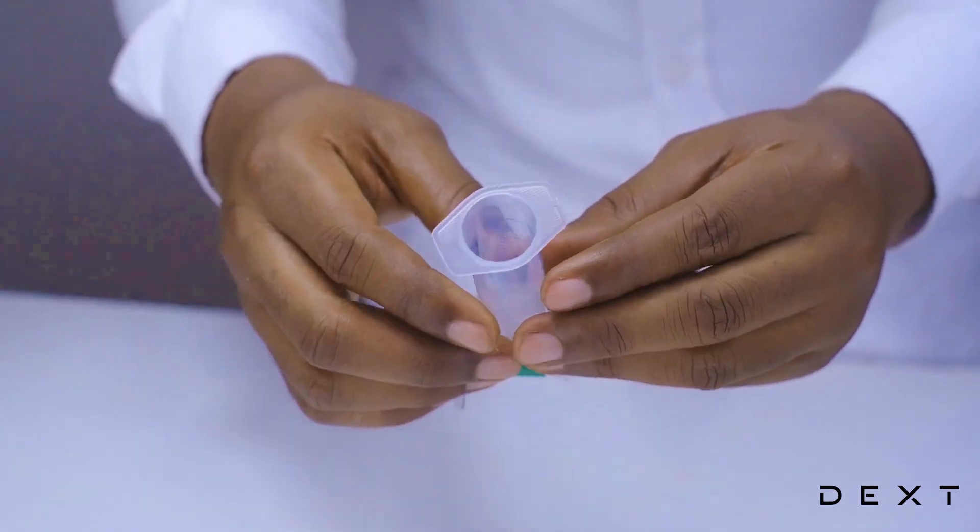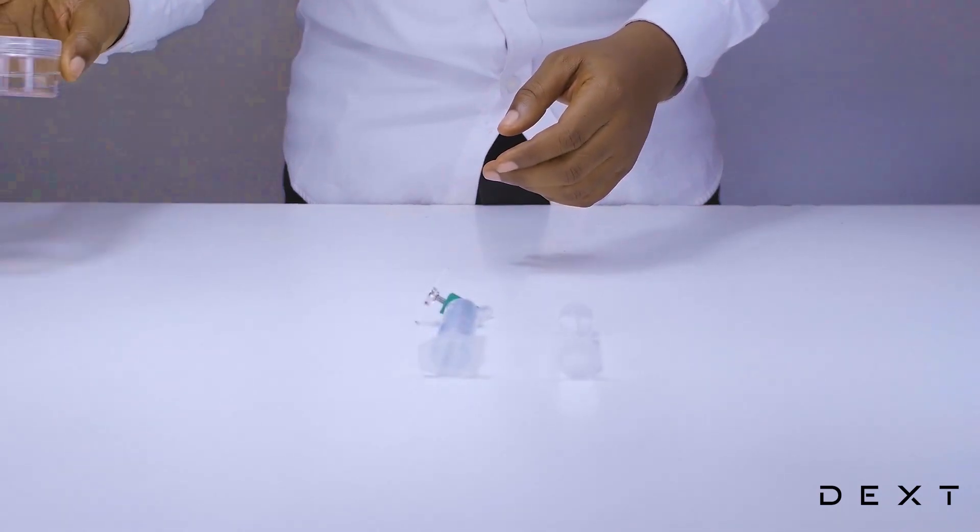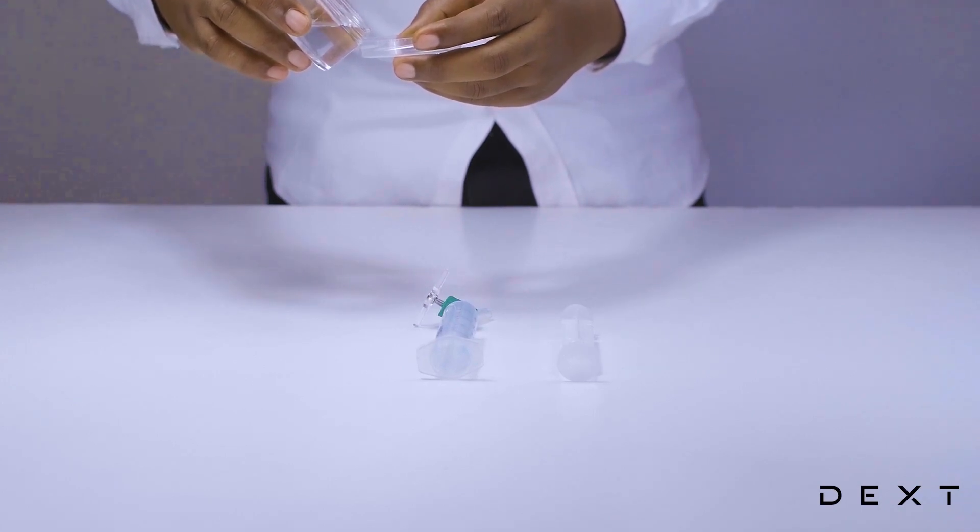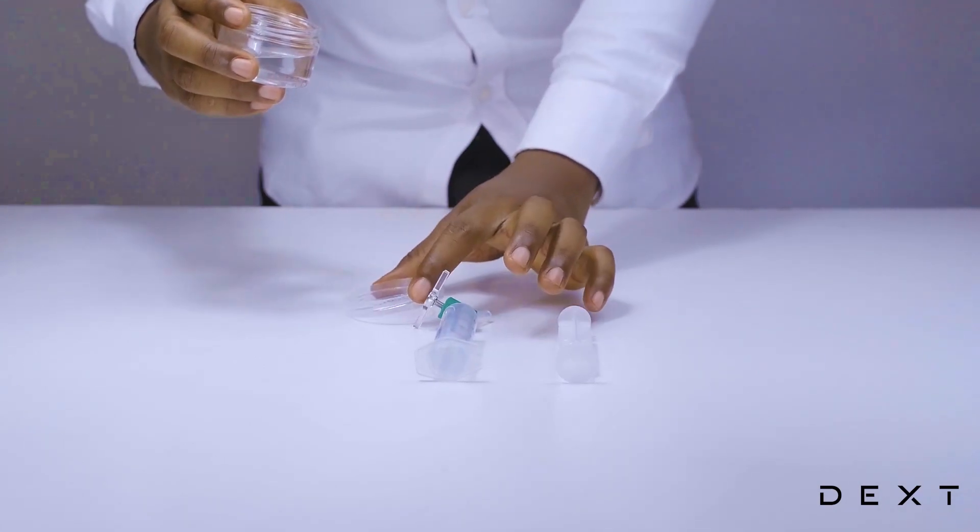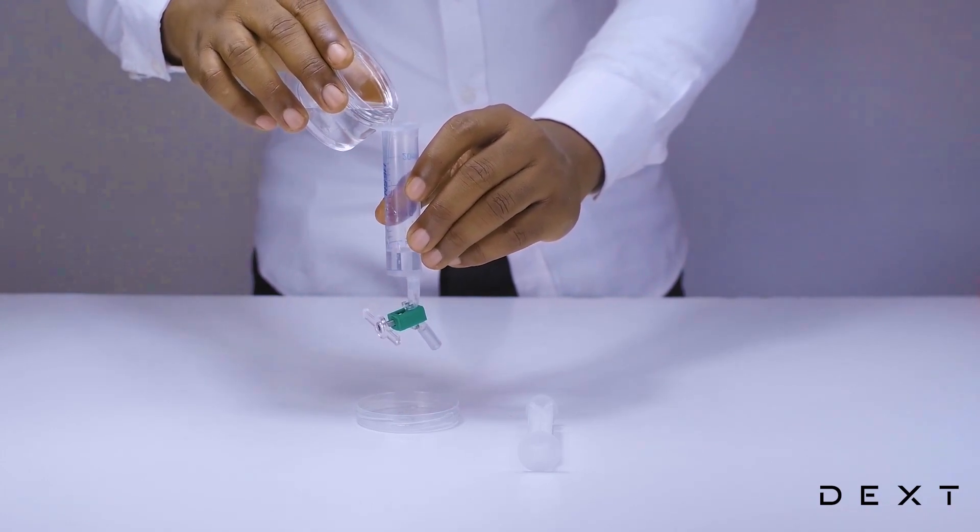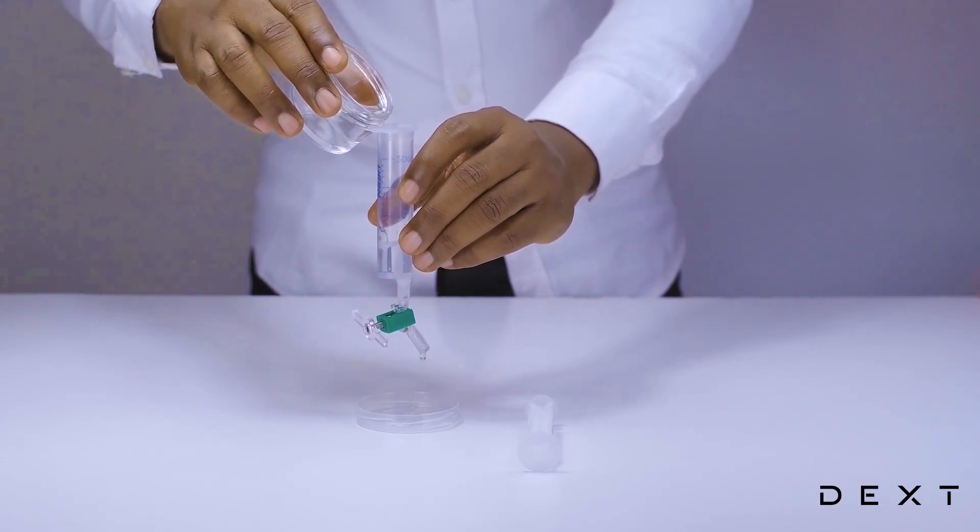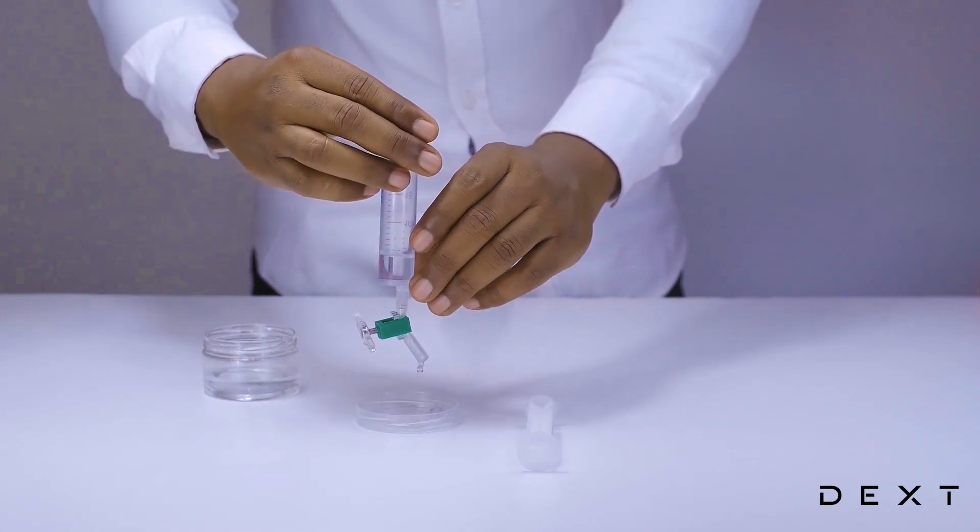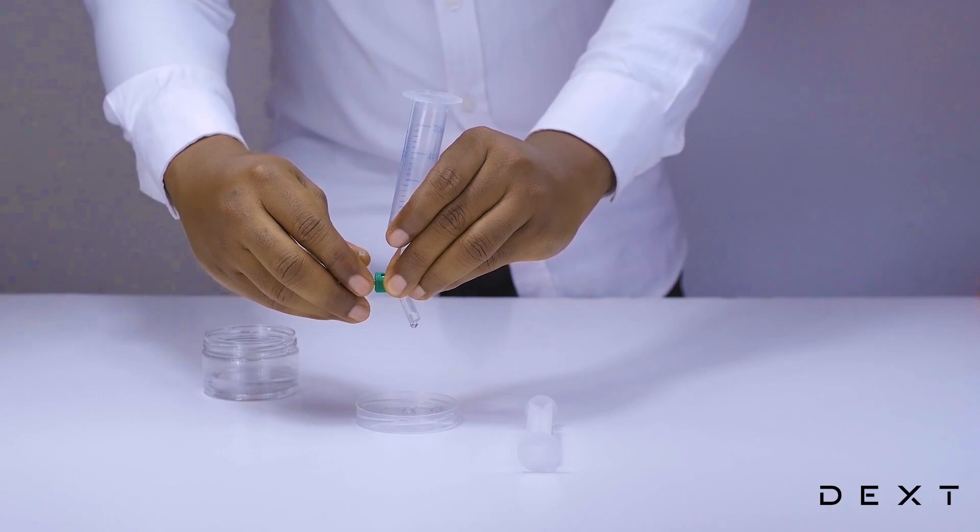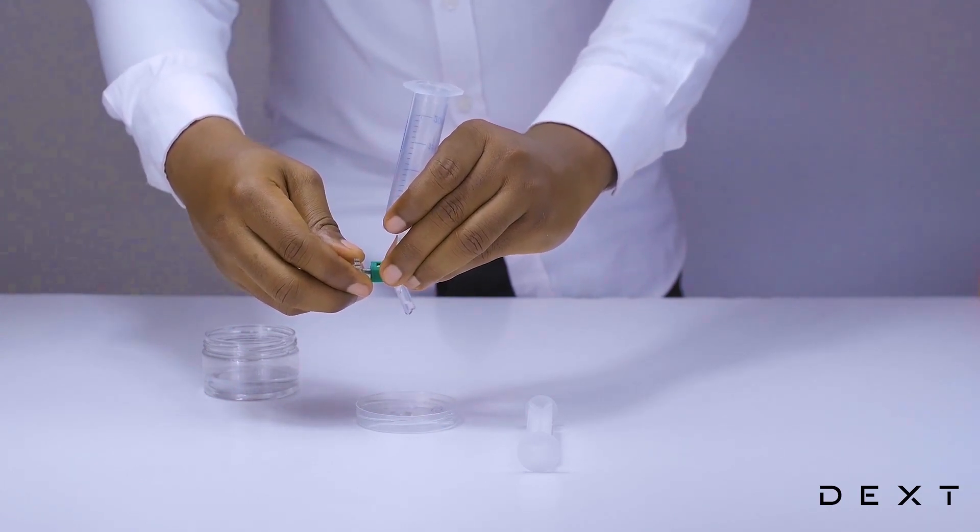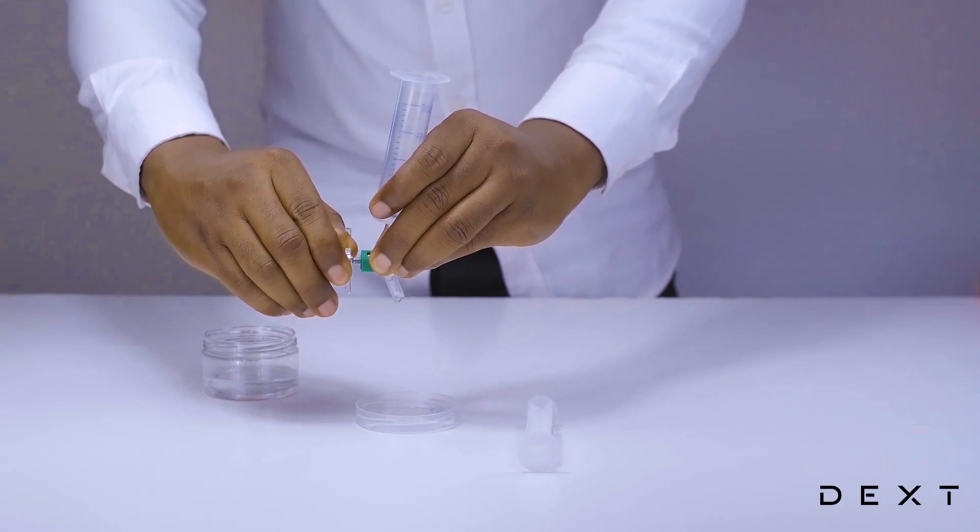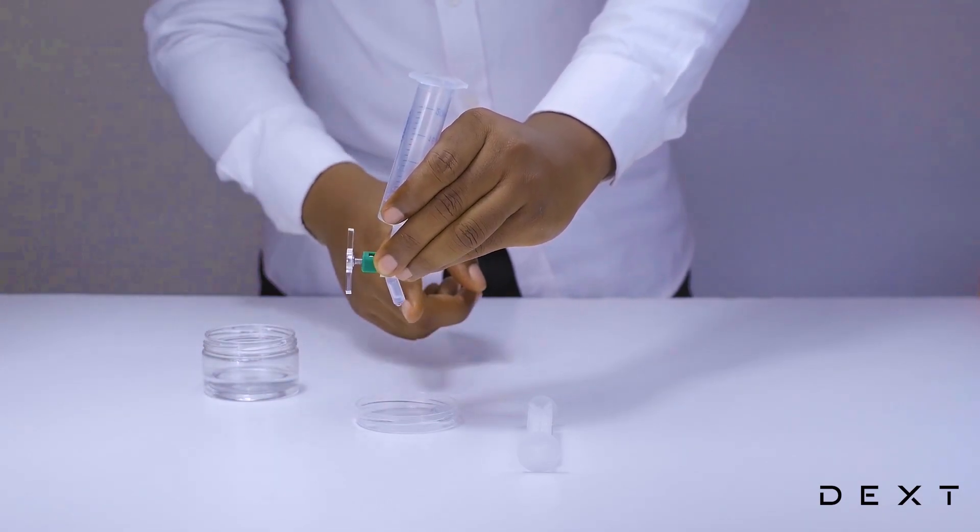The next thing we are going to do is to test our improvised separating funnel. We are going to do that by pouring just a little bit of water through it. We will gently pour some water. It is very likely that you are going to see the water is dripping. No problem. We just tighten our tab a little bit more until the water stops dripping. Again, be careful not to tighten too much so as not to break your plastic piece.